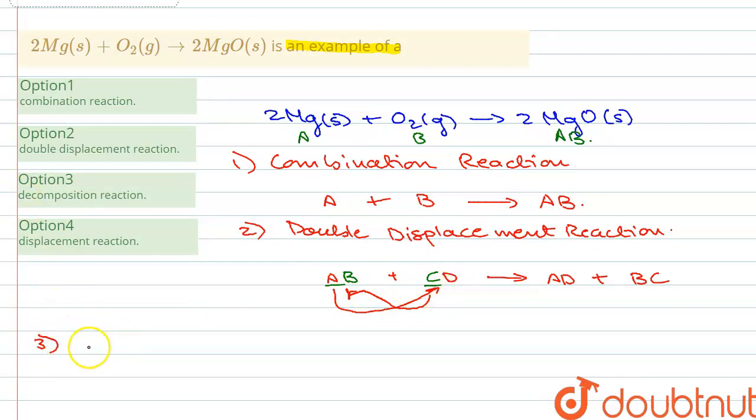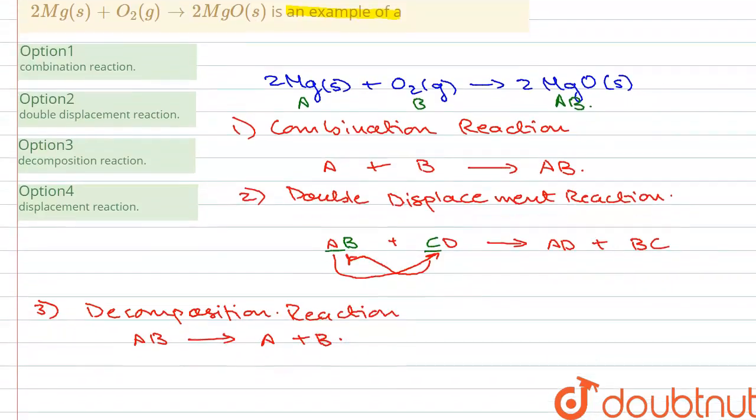The third is decomposition reaction. So in decomposition reaction what happens is a single reactant breaks down into two or more products. For example, we have AB which breaks down into A plus B. So this is an example of decomposition reaction.